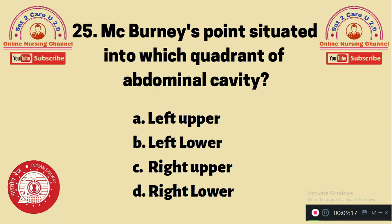Question 25: McBurney's point is situated in which quadrant of the abdominal cavity? A. Left upper, B. Left lower, C. Right upper, D. Right lower. McBurney's point, used to detect the pain area in appendicitis, is located in the right lower quadrant of the abdomen. The answer is D.